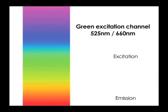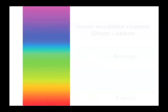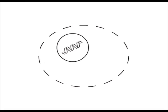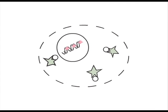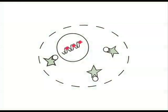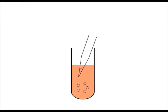Channel 2 of the cellometer has green excitation to detect red emission. For a dead cell, PI enters through the damaged cell membrane and binds to its DNA, producing very strong red fluorescence.